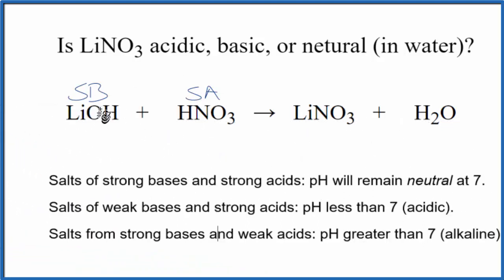So now when we look at the rules, we're looking for a strong base, strong acid. Here's a strong base, strong acid. And that tells us the pH of this solution here will be neutral, be right around 7.